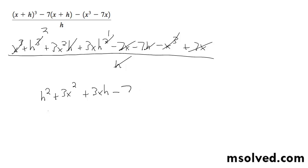And if you want, you can, I suppose you could group the h squared and the plus 3x h and get h quantity h plus 3x, and then plus 3x squared minus 7. Either way, that works, that's it.